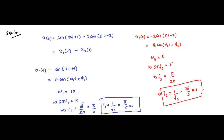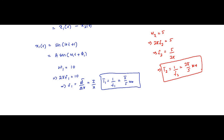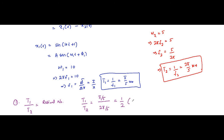Now, the first condition to determine whether the resultant sum of two signals is periodic is that the ratio of the two time periods should be a rational number. Here T1/T2 equals (π/5) divided by (2π/5), which equals 1/2. Since 1/2 is a rational number, the given resultant signal — the sum of the two signals — is periodic.